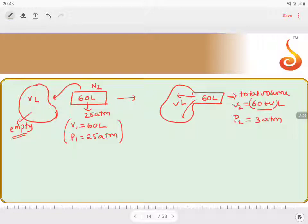So it is at constant temperature conditions. When pressure and volume relation is taken, Boyle's law gives you P1V1 equals P2V2. I can apply a simple logic: P1 is 25 into 60 will be equals to P2 is 3 into 60 plus V.